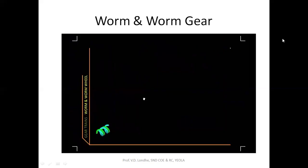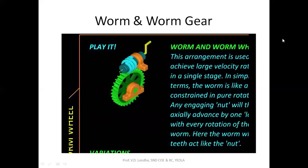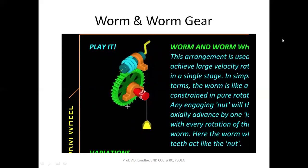We can also use a worm and worm wheel as a simple machine. You can take a worm and worm wheel and attach a drum to the slow-moving part — the worm wheel — and attach a load to it. Because the load moves slowly, it must be receiving a larger force, which is the mechanical advantage gained. The worm rotates through several rotations while the wheel rotates only a fraction of a rotation, and slowly the load rises.